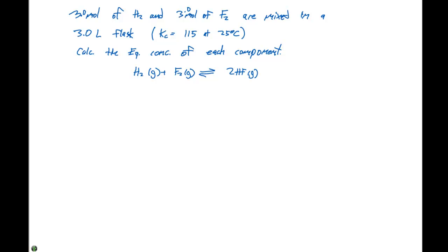We need to calculate our initial concentrations of each component. The initial concentration of H2 equals the concentration of F2, which is 3.0 moles divided by 3.0 liters, or 1.0 molar. For our concentration of HF, initially there isn't any present, so that concentration is 0.